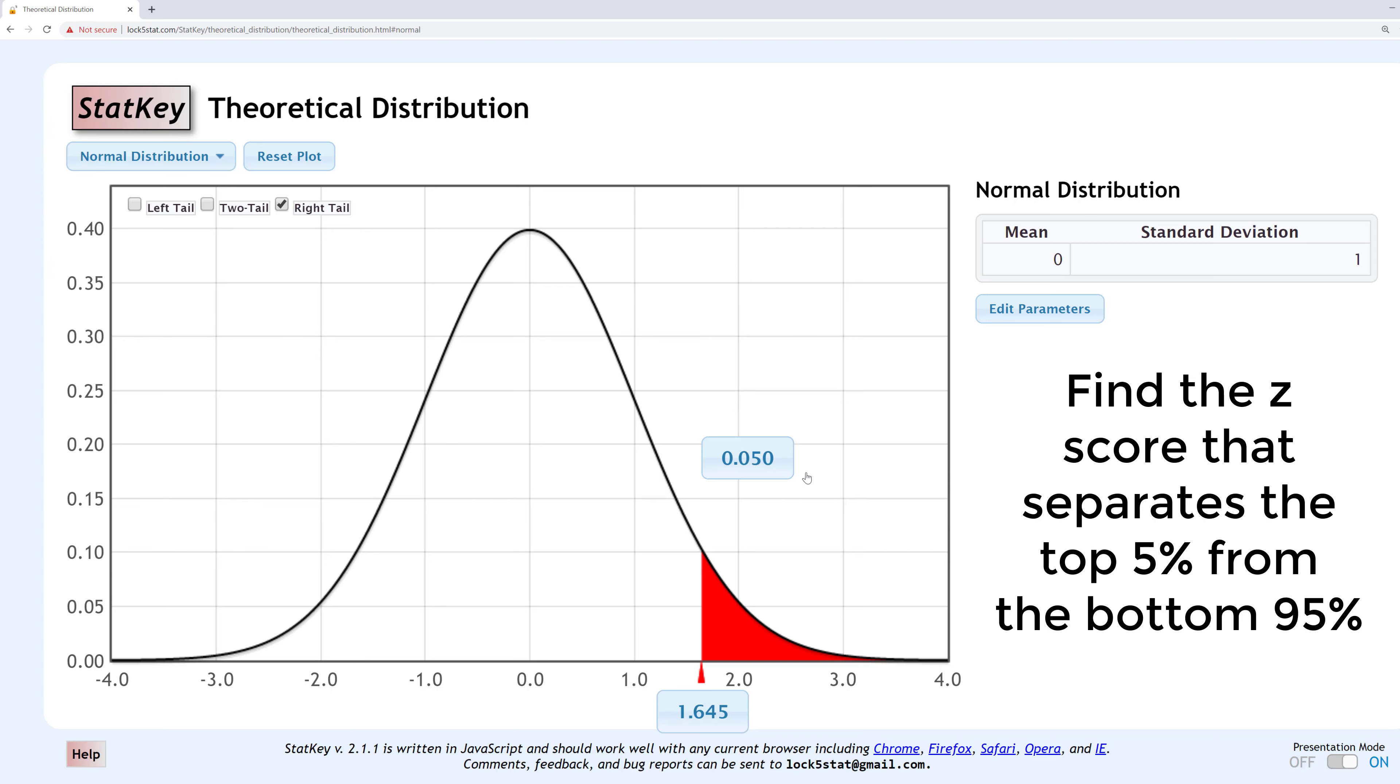The Z-score at the bottom now changed. This is the score that separates the bottom 95% from the top 5%.